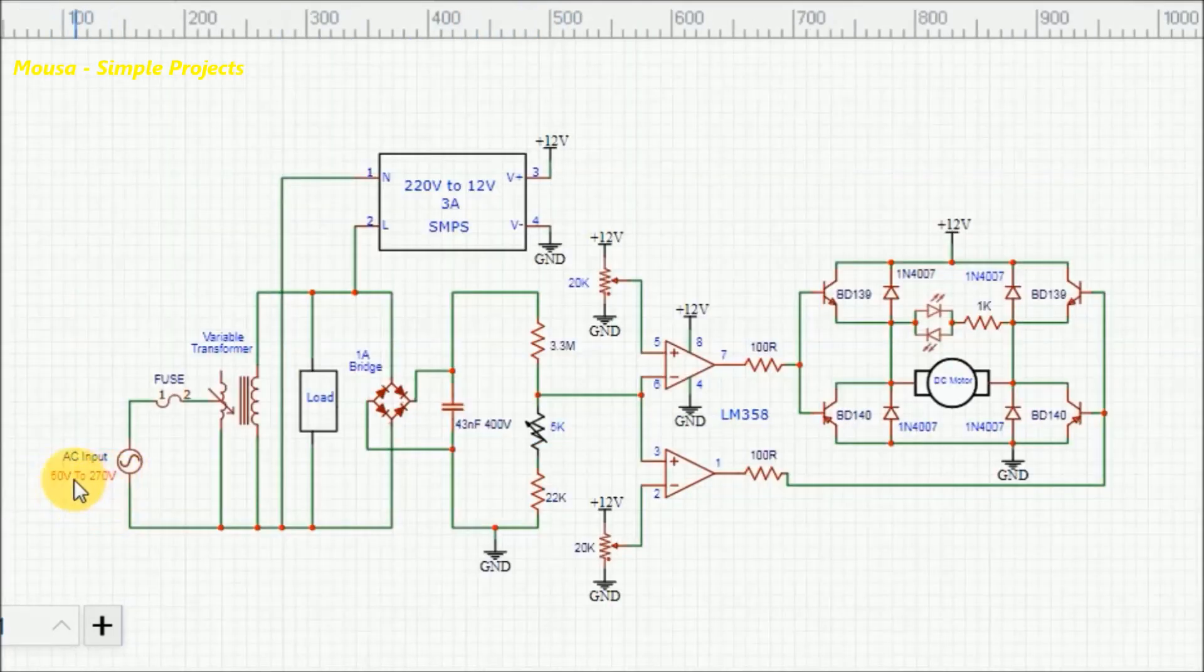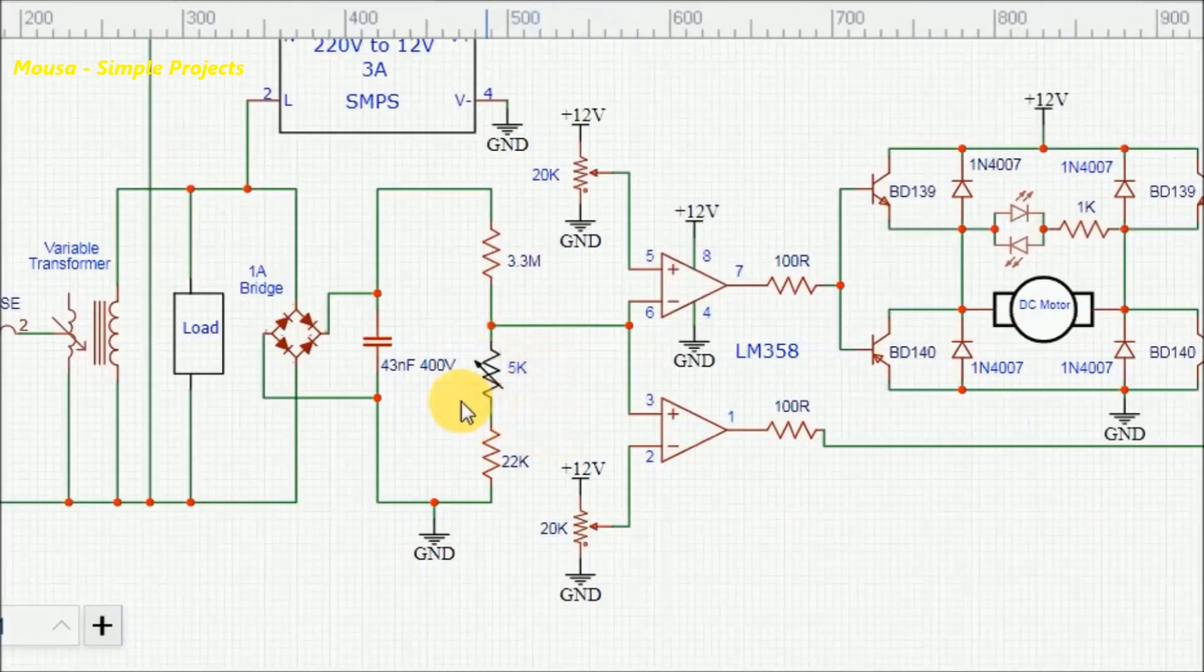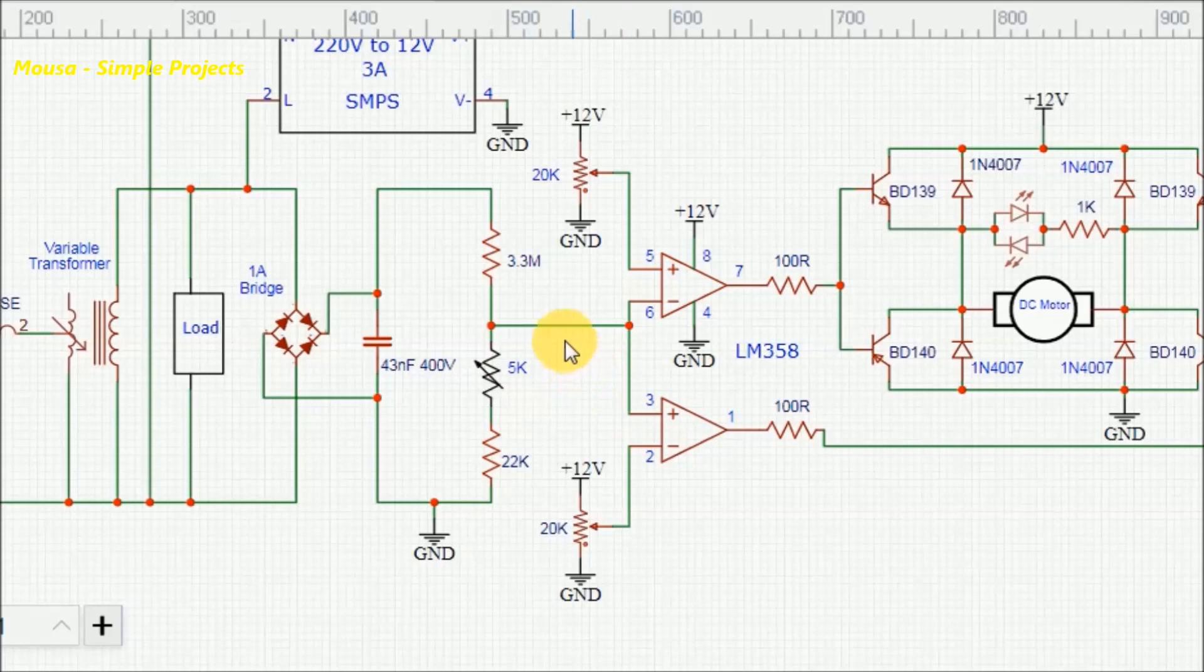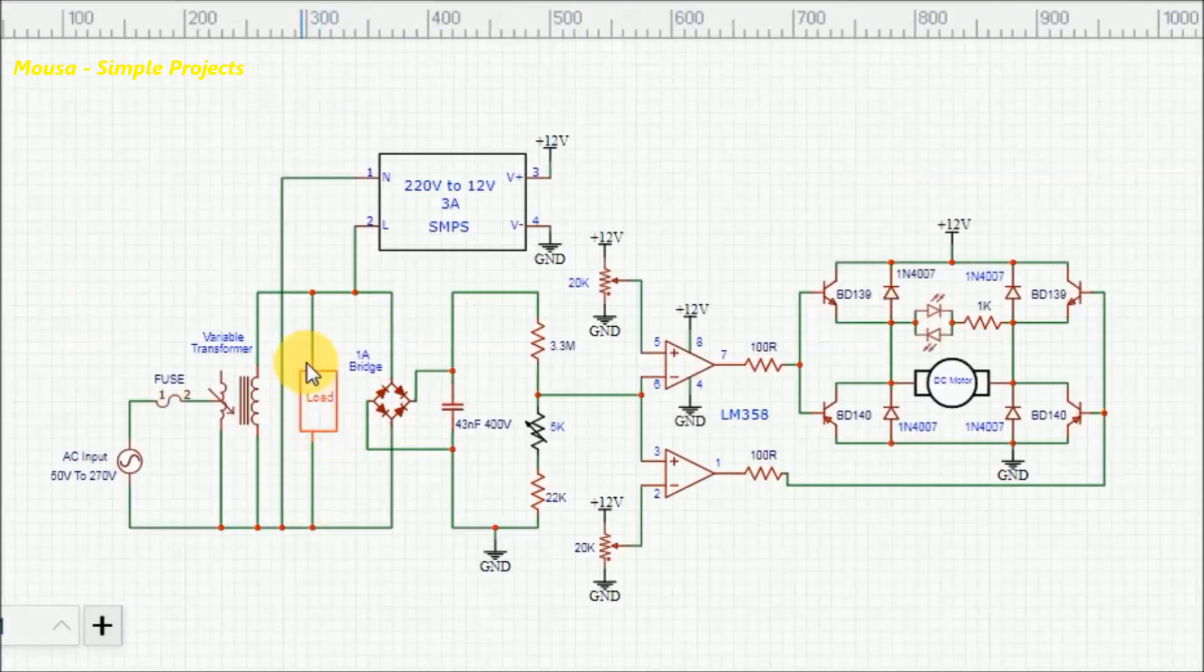The mains voltage with unstable value is connected to the primary of the transformer. The secondary side of the transformer is connected to the load. Here we have three potentiometers. You have to preset them at the beginning. The voltage at this point should be equal to the voltage of the secondary side of the transformer divided by 100.